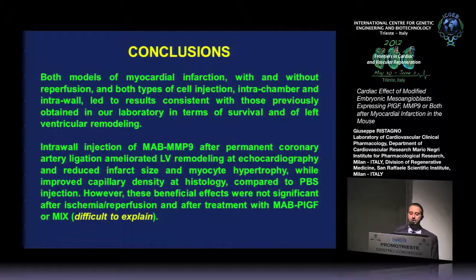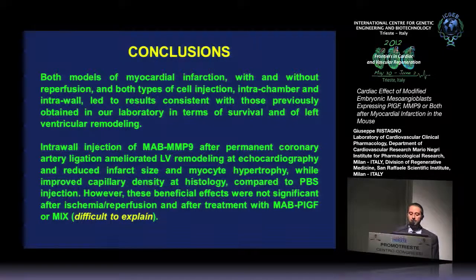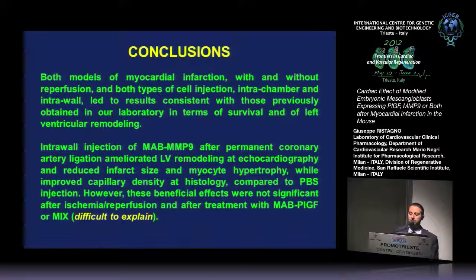In conclusion, both models of myocardial infarction — with and without reperfusion — and both types of cell injection led to results consistent with those previously obtained in our laboratory in terms of survival and left ventricular remodeling. However, intra-wall injection of mesangioblasts expressing MMP9 after permanent coronary artery ligation ameliorated left ventricular remodeling at echocardiography and reduced infarct size and myocyte hypertrophy while improving capillary density. These beneficial effects were not significant in the ischemia reperfusion model, nor after treatment with MAPs expressing PLGF or the mix of PLGF and MMP9. These results are difficult to explain and I hope to have some good feedback from the audience.